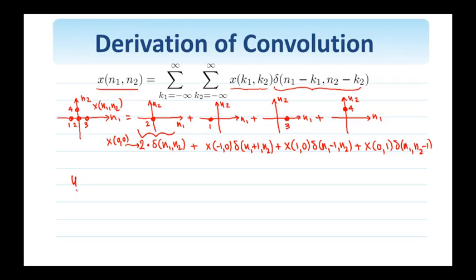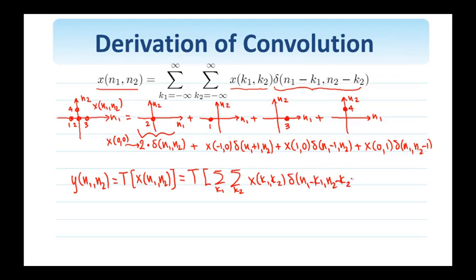So, I have a system. Y is the output. I denote the system by T that has x as its input. I'll use the above expression decomposition and write x as this sum over k1, k2. So far, whatever I've written applies to any signal.